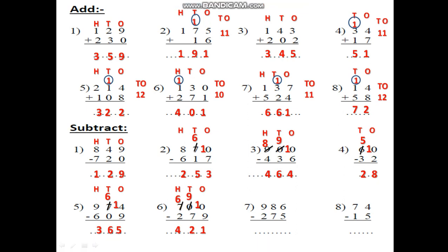986 minus 275. Put the homes. 100s, 10s and 1s. 6 minus 5. The bigger number is up, so I can do it. 6 minus 5. After 5: 6. It is 1. 8 minus 7. After 7: 8. It is 1.